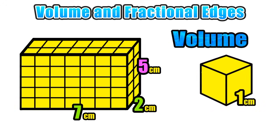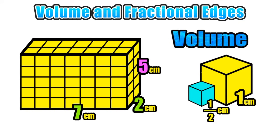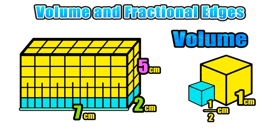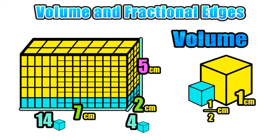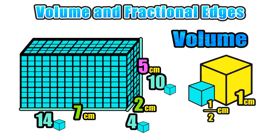Now let's take our understanding of volume to the next level. What if, instead of expressing volume in 1-centimeter unit cubes, we wanted to express it in half-centimeter unit cubes? Since this is a smaller unit, it's going to take several more of these smaller cubes to fill the entire rectangular prism. Since the dimensions of the unit cube are half the size, we divide the length, width, and height by 2. This doubles the number of cubes along the length from 7 to 14, the width from 2 to 4, and the height from 5 to 10. The volume of the figure has not changed — the amount of space inside is still the same — however, since we are using smaller unit cubes, the volume will be represented by a larger number.